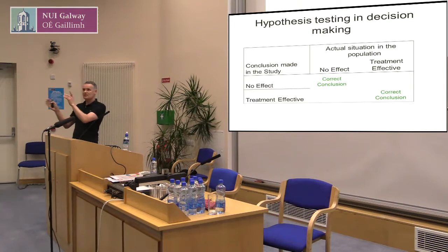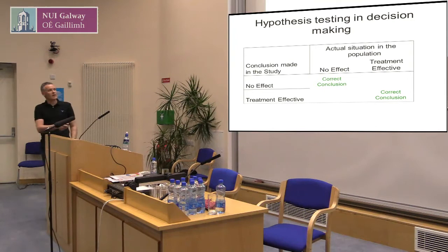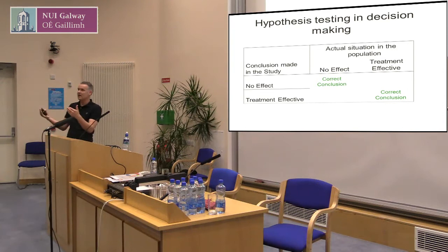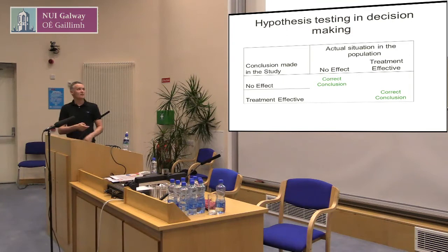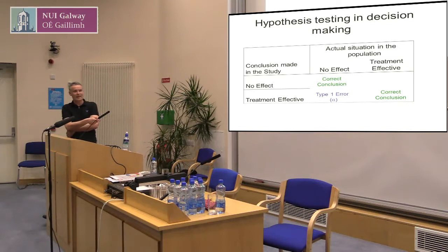Martin gave me these definitions earlier — Type 1 and Type 2 error. Which of those two was worse? If the treatment was effective and we missed it, you'd hope the standard care itself is fine — we've missed it, so maybe that's not such a bad error. Maybe it's worse to replace the standard treatment with one that wasn't as good. Statisticians give these definitions: false positives — we claim something has happened and it hasn't — and being statisticians, we use Greek symbols for that.